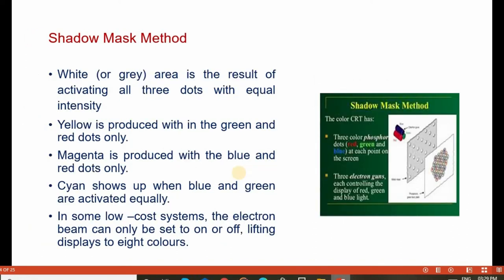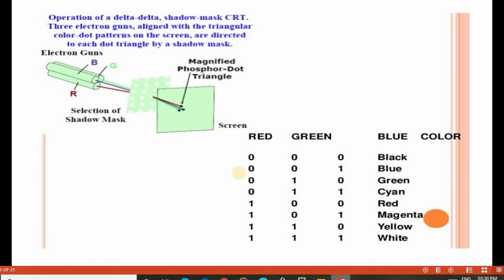In the shadow mask method, the white area is the result of activating all 3 dots with equal intensity. Yellow is produced with green and red dots only. Magenta is produced with blue and red dots only. Cyan is produced with blue and green dots only. In low cost systems, the electron beam can only be set to on or off, yielding 8 displayable colors.